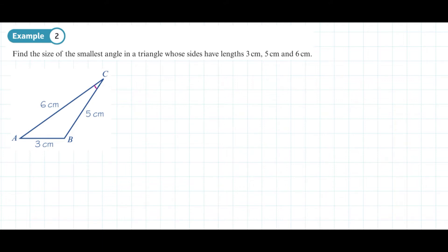is always going to be opposite the smallest side in the triangle. This helps us straight away when deciding the orientation of our sides in the formula. We're going to be working out angle C.